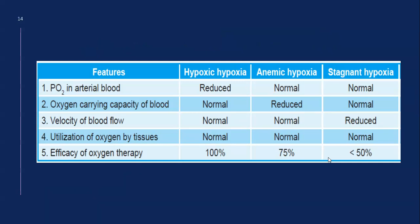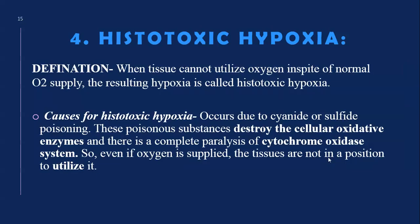In stagnant hypoxia, the partial pressure of arterial blood is normal, oxygen carrying capacity is normal, but velocity of blood flow is reduced and utilization of oxygen by the tissues is normal. If you give 100% oxygen therapy, the result is less than 50% effective, because until blood flow velocity is increased, the stagnant blood cannot move and distribute oxygen throughout the body.